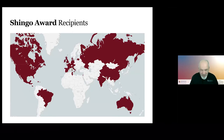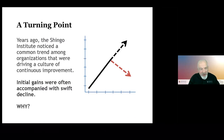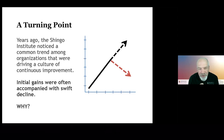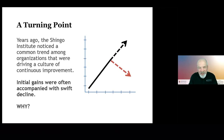Let me give you a little history of the initial Shingo Prize and what happened. When somebody did good work, had good lean systems and tools and got good results from it, they received a Shingo Prize. Unfortunately, many recipients were unable to sustain their improvements. After receiving a Shingo Prize, we saw a large number of organizations decline in performance, and only a few continued to get better. As one would expect with continuous improvement, you'd expect the best to keep getting better — but that wasn't the case. We wanted to understand why.